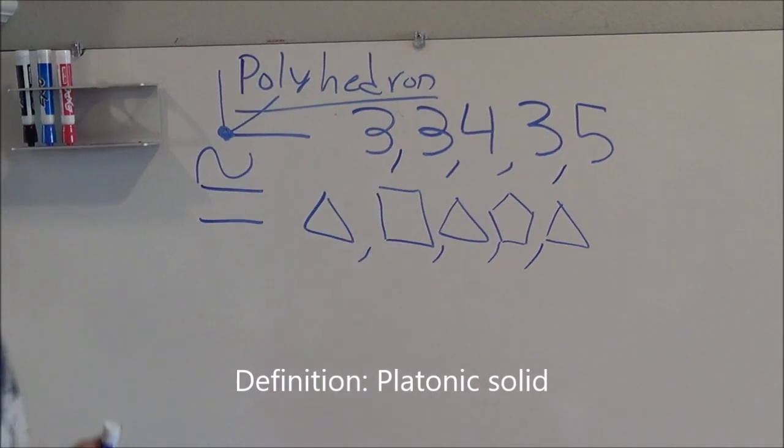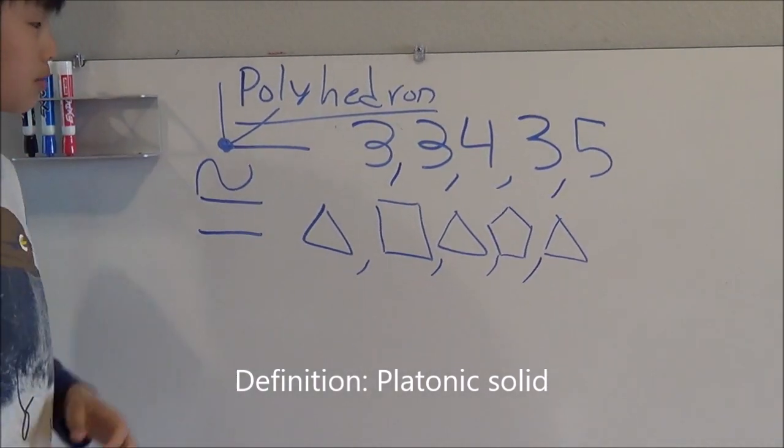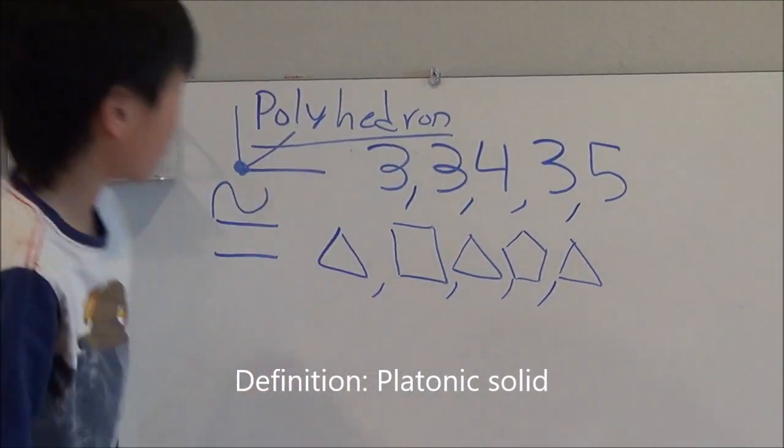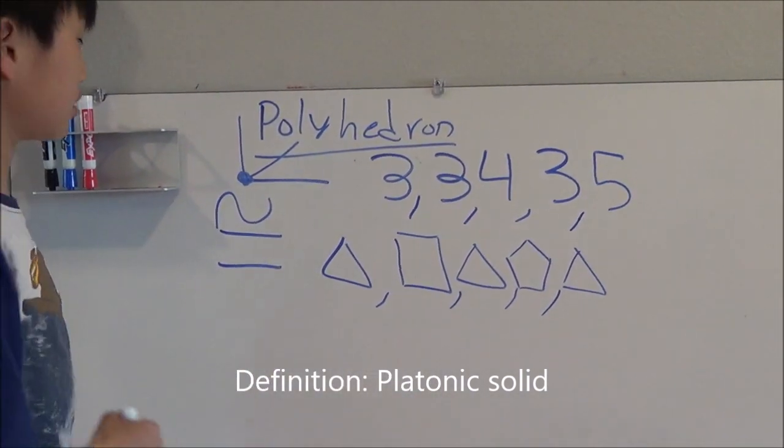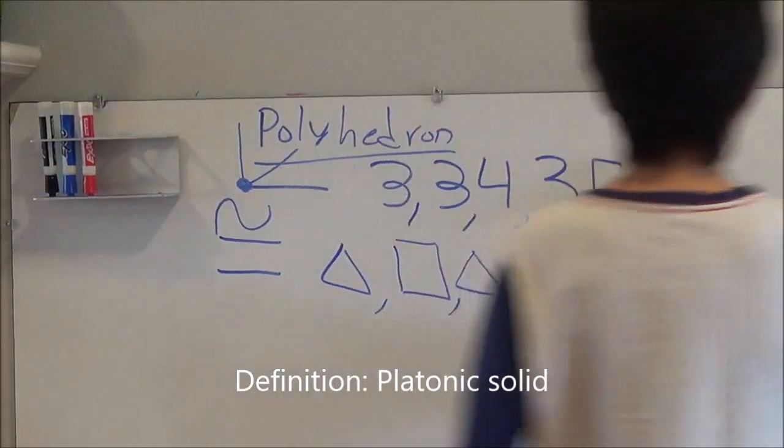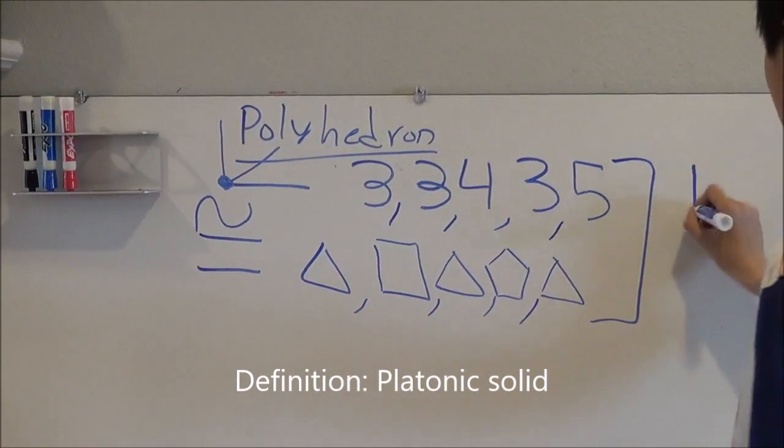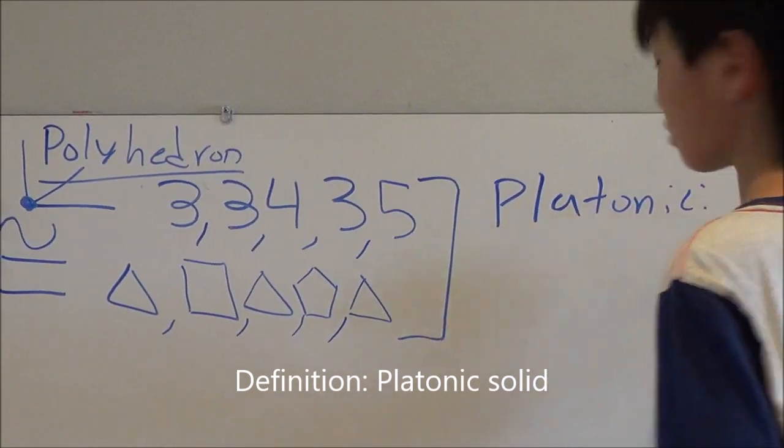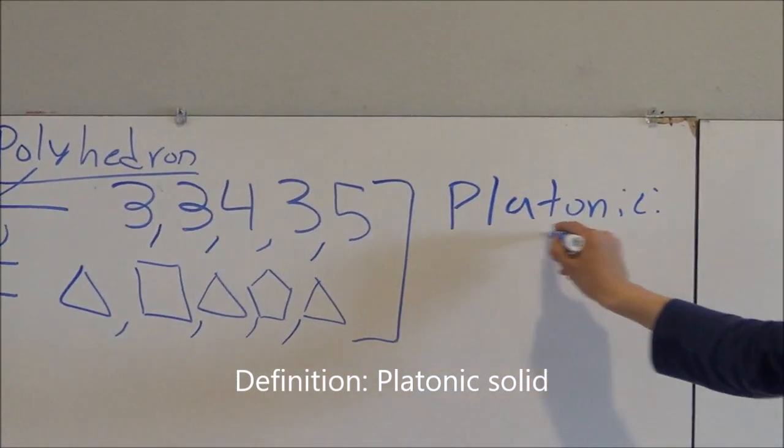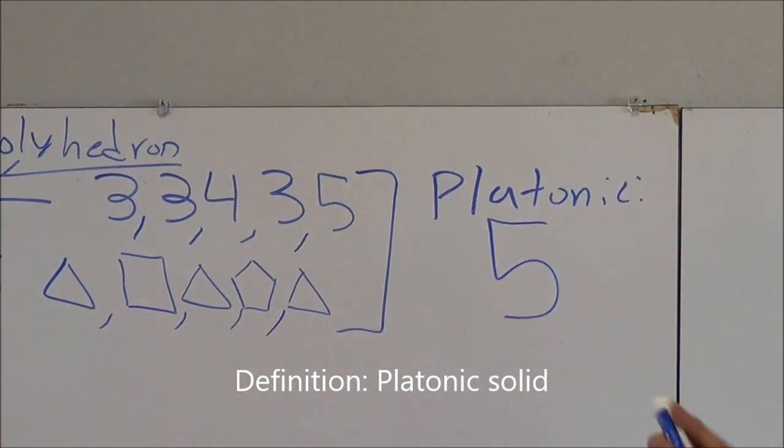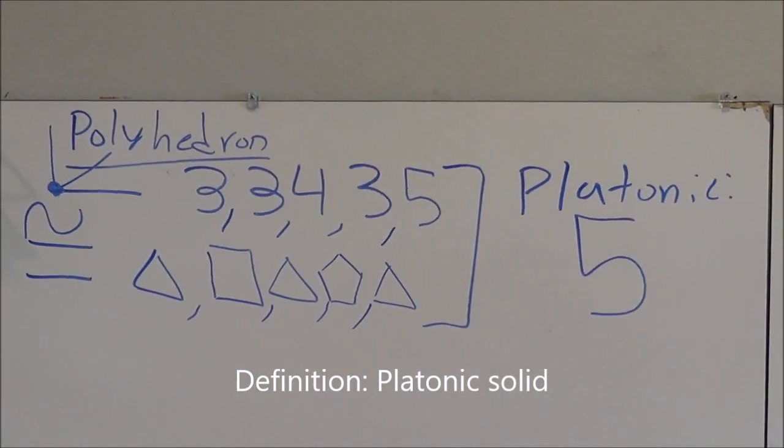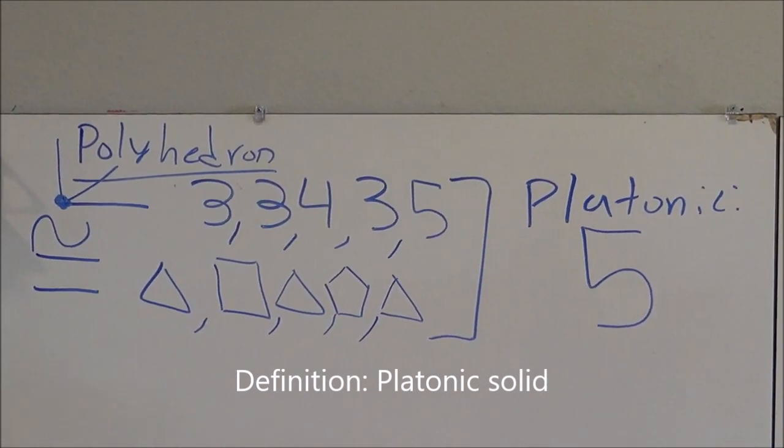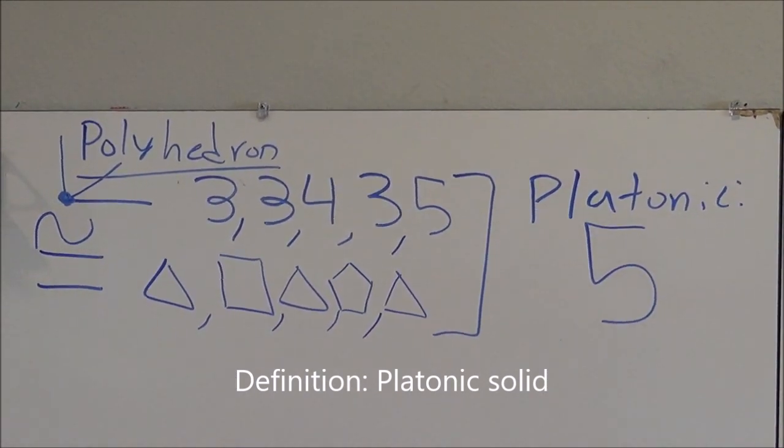So, these two rules, each vertice must have the same amount of sides connected to it, and each face must be congruent, is enough to limit the number of platonic solids to five. And these five are, as I mentioned many times before, tetrahedron, cube, octahedron, dodecahedron, and icosahedron.